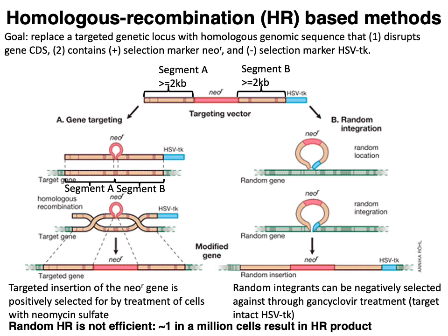Another classic approach to gene editing is homologous recombination (HR) based methods. The broad goal of HR-based gene editing is to replace a target genetic locus with a homologous genomic sequence that does two things: first, disrupt the coding sequence of a gene you're trying to disrupt, and second, introduce positive and negative selection markers that allow you to identify successful homologous recombination.